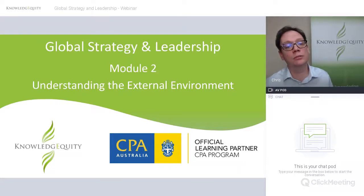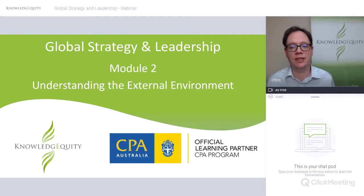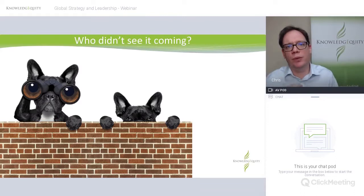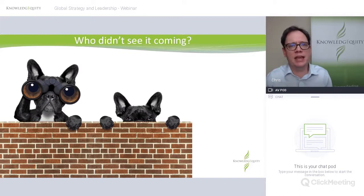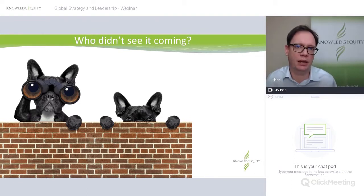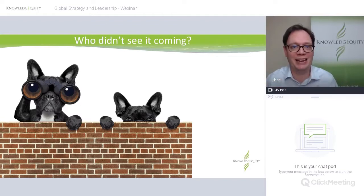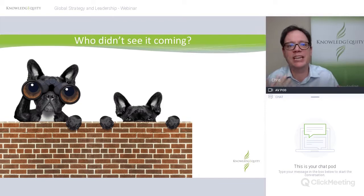Hi, my name is Chris and welcome to Module 2 of Global Strategy and Leadership. In this module, we're looking at the external environment. If we're going to do an analysis on an organisation in an industry, we've got to understand the broad macro impacts — this industry sits in the environment on our planet, so it's affected by a whole bunch of forces, both external remote forces and more focused close forces. There are two key concepts we'll get to shortly about that.